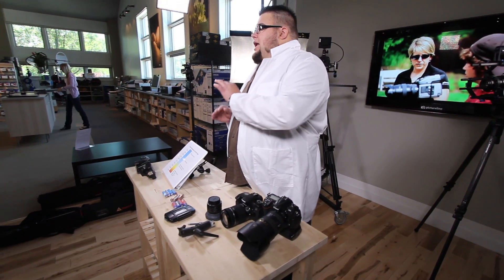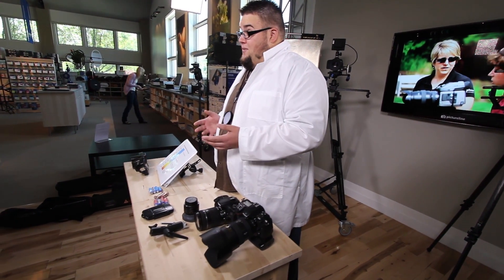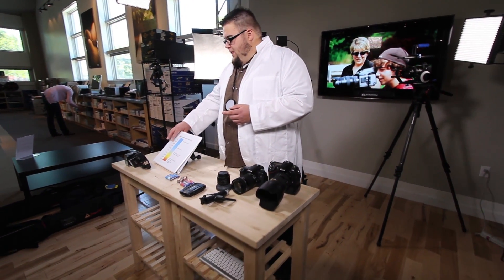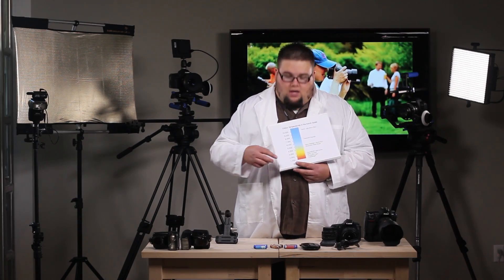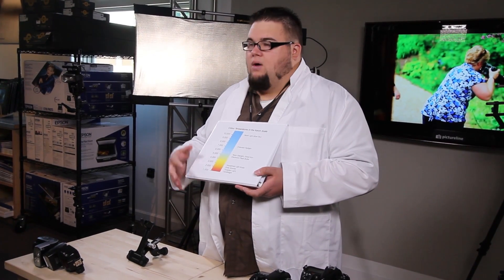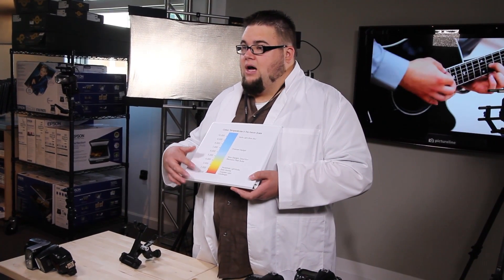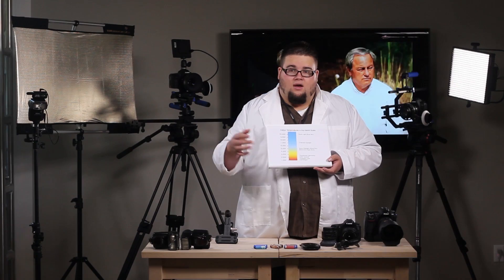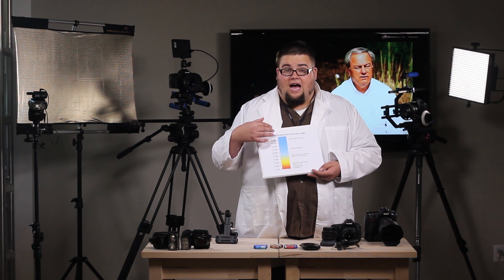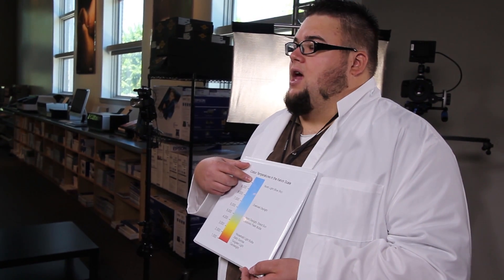When we're talking about white balance, we're talking about the Kelvin scale. Some of you might have heard of this — don't be afraid of it. The Kelvin scale runs the spectrum of visible light from red to blue, and we're talking about varying degrees of temperature. The lower the temperature a light source gives us, we say it's more red or yellow. And the higher the temperature — meaning the hotter it is — the bluer it's going to get.